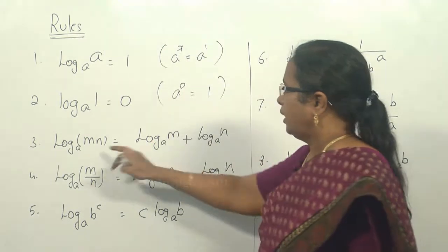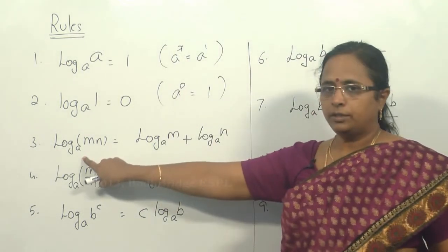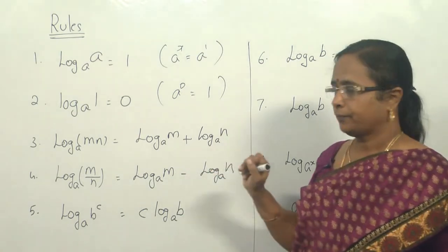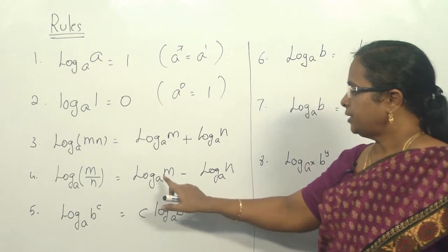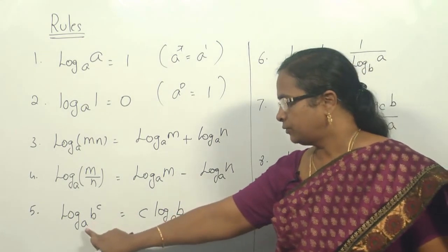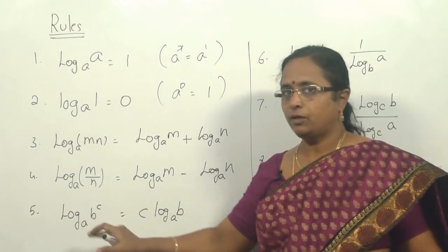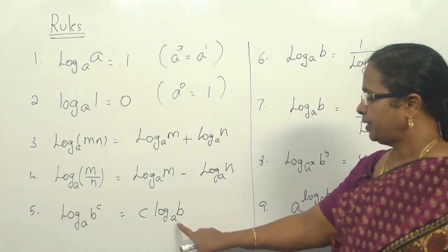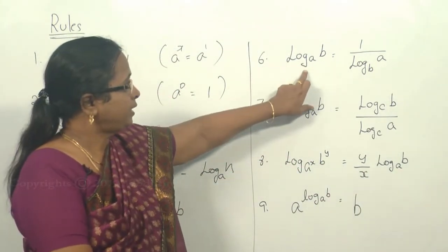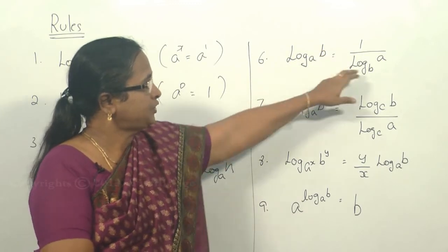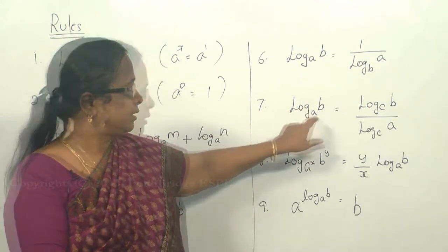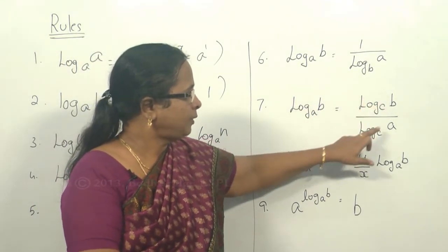Rule 3: log of mn to the base a equals log of m to the base a plus log of n to the base a. Rule 4: log of m by n to the base a equals log of m to the base a minus log of n to the base a. Rule 5: log of b to the power c to the base a — the power c can be brought outside, giving c times log of b to the base a. Also, log of b to the base a equals 1 divided by log of a to the base b, and log of b to the base a can be written as log of b to the base c divided by log of a to the base c.